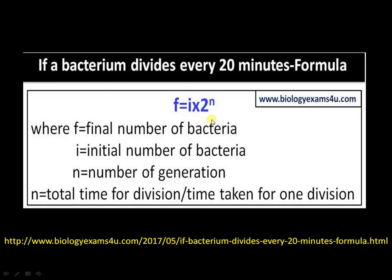To summarize, you can answer any questions like this using the formula F = I × 2^N, where F is the final number of bacteria, I is the initial number of bacteria, and N is the number of generations. Hope things are clear. Thank you so much for your support at biologyexamscore.com.